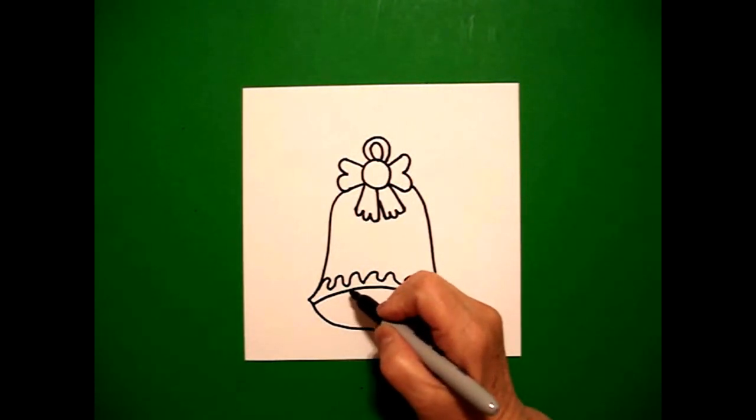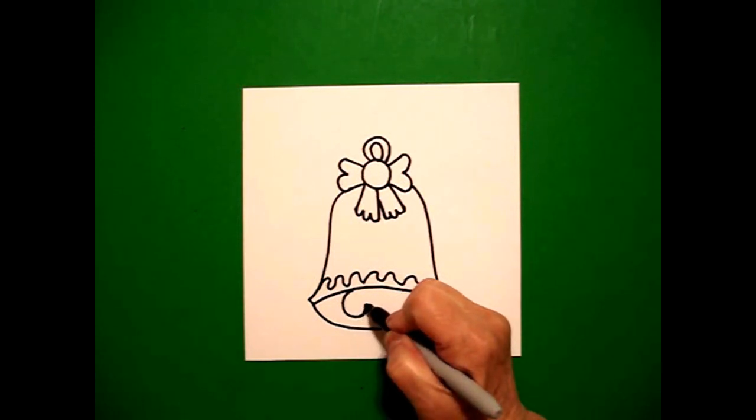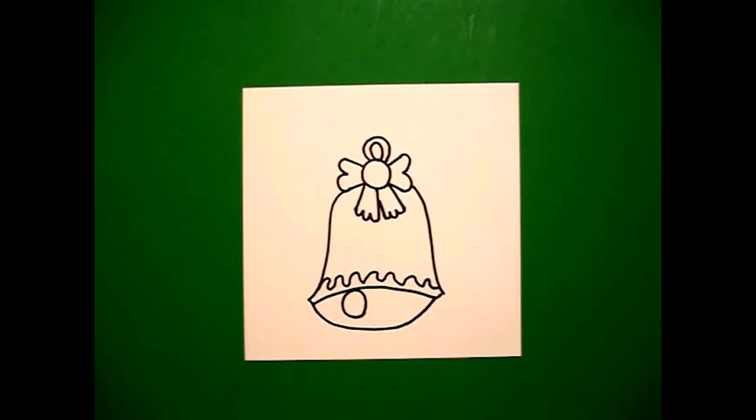And right here on the left, kind of towards the center, I'm going to draw a curved line, almost like a baby circle, and connect. Okay, let's see how we're going to color this in.